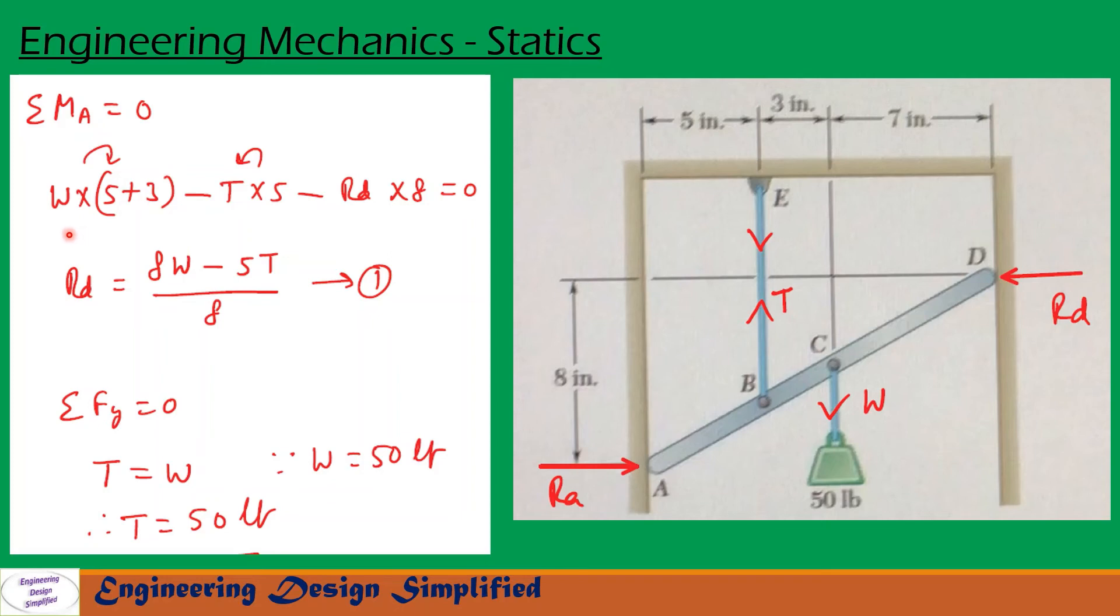Moment due to W is W into this distance 5 inch plus 3 inch, 8 inch, minus T into this distance minus RD into this height 8 inch, that equal to 0. So W times 8 minus T times 5 minus RD times 8 equal to 0. From this equation we can write RD equal to 8W minus 5T divided by 8. Let us call this equation 1.